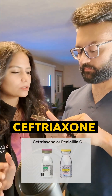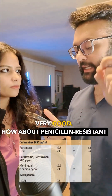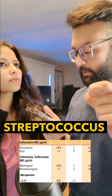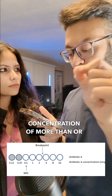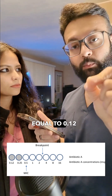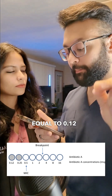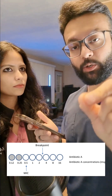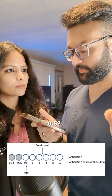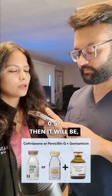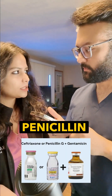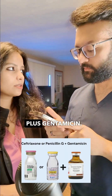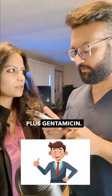For penicillin-resistant streptococcus with a minimum inhibitory concentration (MIC) of greater than or equal to 0.12 but less than 0.5, treatment will be ceftriaxone or penicillin G plus gentamicin.